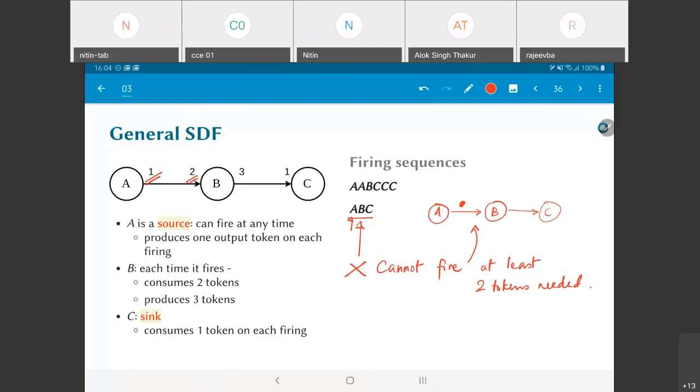Why am I saying at least? Because if there were more than two tokens, that's not really a problem. It will consume only two and still leave something behind on that channel. But if there is only one token present then B simply cannot fire, and effectively this is an invalid sequence.